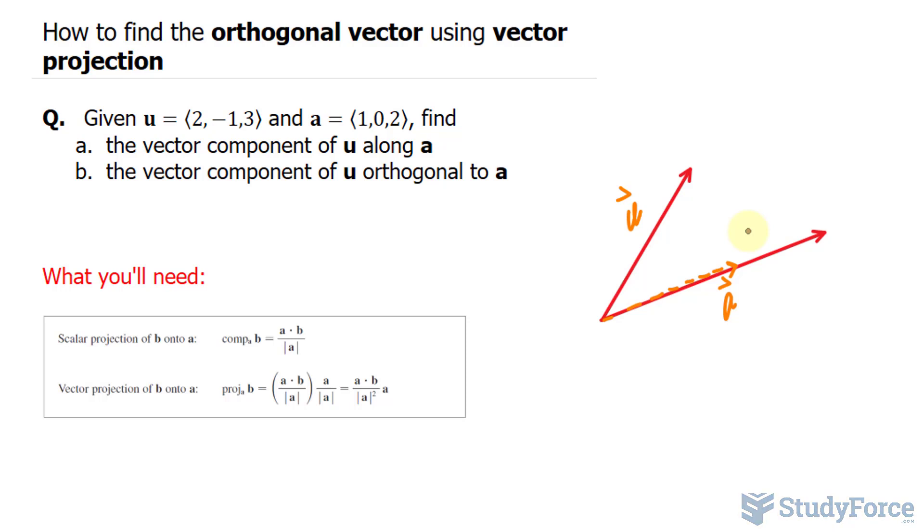But when you're looking for the orthogonal vector, you're actually looking for this vector, the one that's in blue. And that will be the answer for question b.